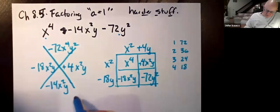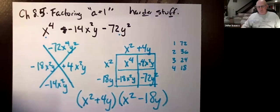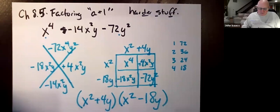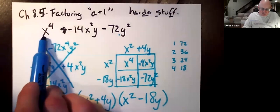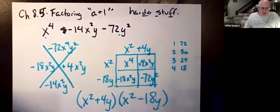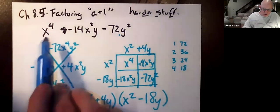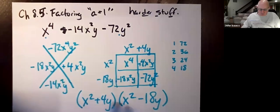So we're done. So x squared plus 4y times x squared minus 18 y. Now you don't have to use the diamond and the box to do a hard problem with this. You do have to realize that if x to the fourth is here and x squared is here and there's no x here, that means there's no greatest common factor of x, that these two terms need to be x squared so that they multiply to x to the fourth.